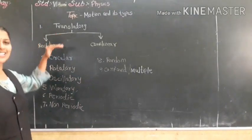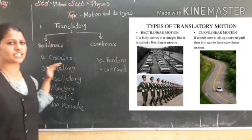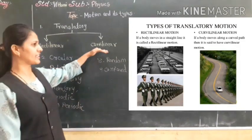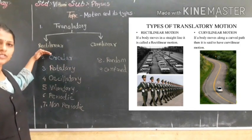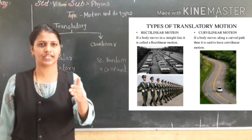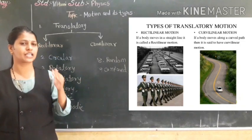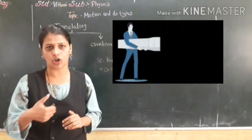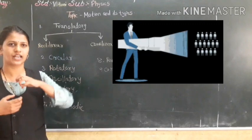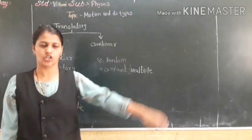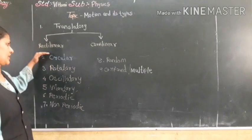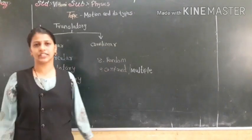In translatory motion, the motions are classified into two types: rectilinear and curvilinear. Rectilinear is when the object moves in a straight line. For example, when you turn on a torch, the light moves in a straight line — that is rectilinear motion.